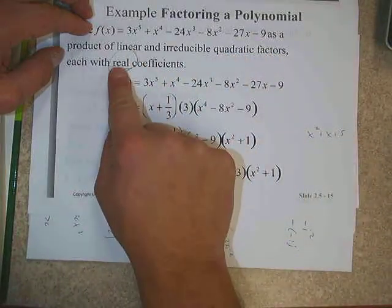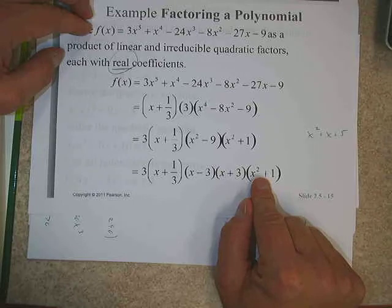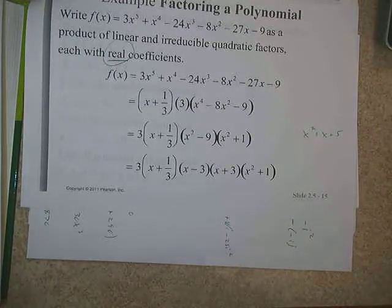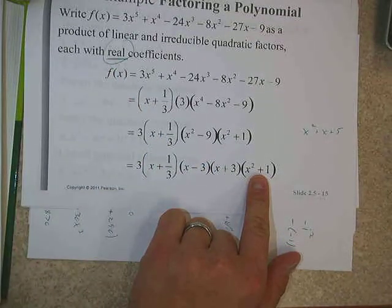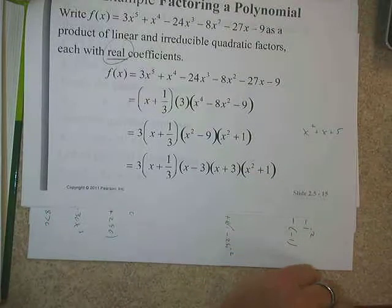When the directions say to factor with real coefficients, only factor far enough so that you don't get any non-real answers. At that point, we're done. If it says 'factor completely,' then we would keep going. But if it says to do the factoring with linear and irreducible quadratics with real coefficients, we don't keep going with the imaginary factors. It depends on the directions how far we go.